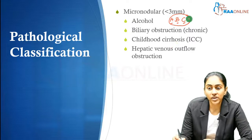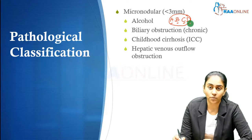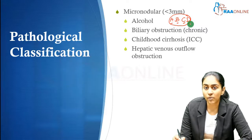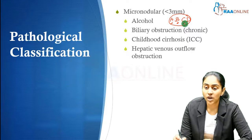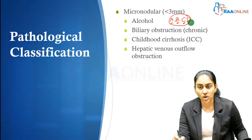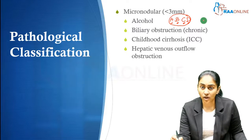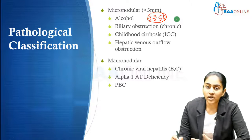We can also add a D — any problem with drainage. Hepatic venous outflow obstruction can also cause micronodular cirrhosis. So: A for alcohol, B for biliary obstruction (long-standing), C for childhood (Indian childhood cirrhosis), and D for drainage problem (hepatic venous outflow obstruction) — all of these can cause micronodular cirrhosis.